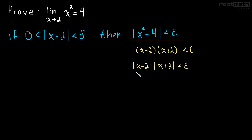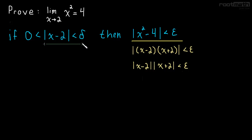So what we really want is to somehow gain control over this product, so that we know for sure that it's less than epsilon. How do we do that? It goes back to understanding what this inequality means. If you have a hard time understanding that, go back to the very first video on the epsilon-delta definition of a limit. This really means we're looking at an interval.